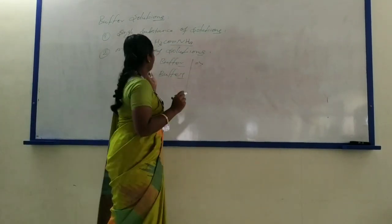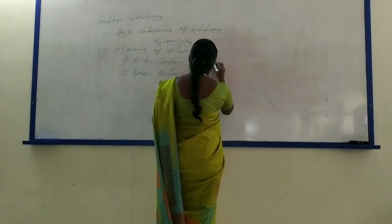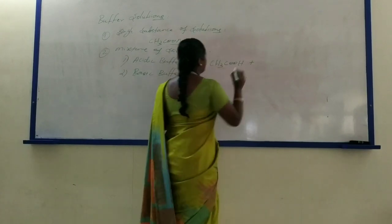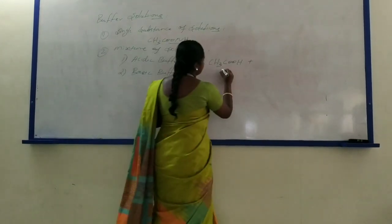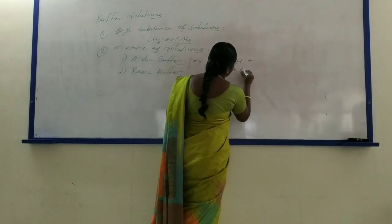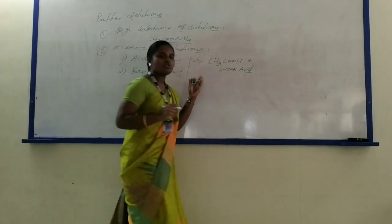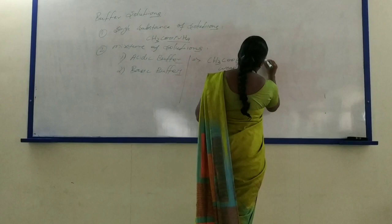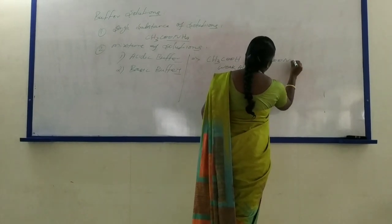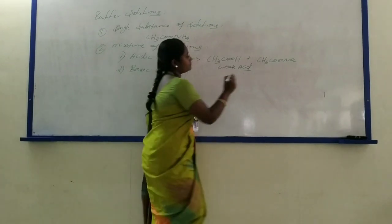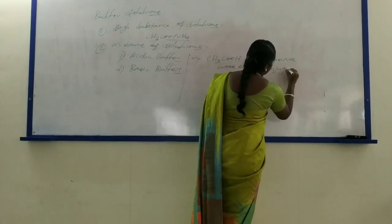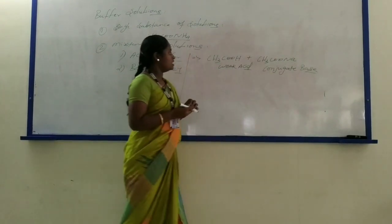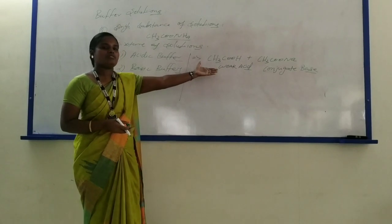The example of acidic buffer is acetic acid as the weak acid, and the conjugate base of the same substance is sodium acetate. These two in combination are named as acidic buffer.